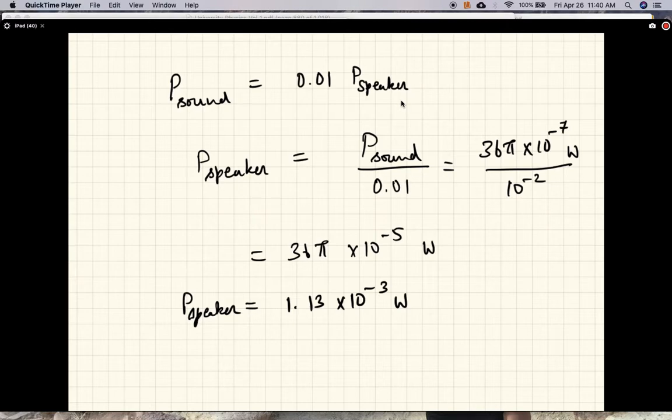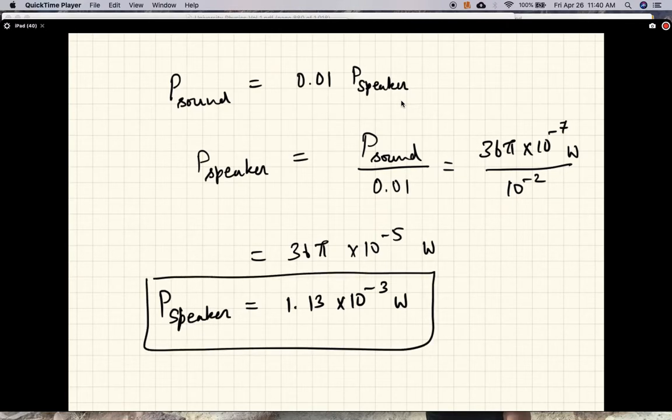OK. So what we are saying here is a 1 milliwatt speaker. If you put your ears right next to the speaker, a 1 milliwatt speaker would produce a 90 decibel sound level. That's pretty impressive. OK. So that does this problem.